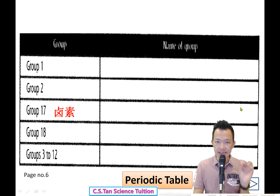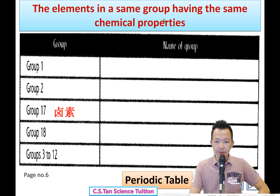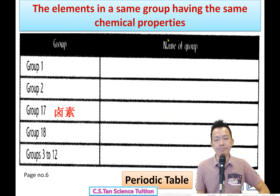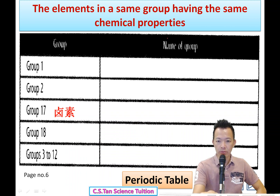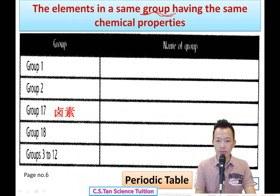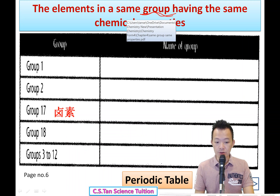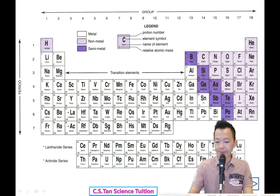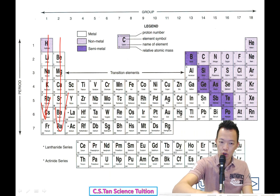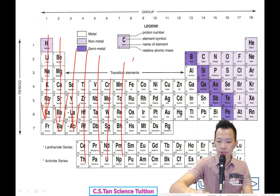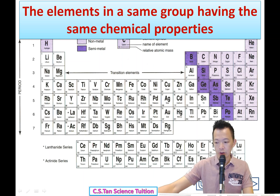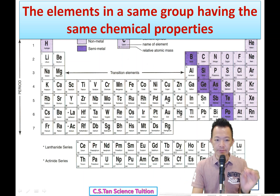Also on page 6, copy this sentence: 'The elements in the same group have the same chemical properties.' 同组的元素有同样的化学特征. But what is meant by 'group'? 什么叫group呢? A group is a vertical column in the periodic table - 一条一条直直的就叫group.